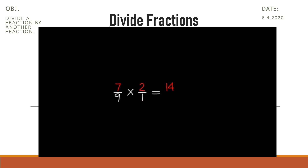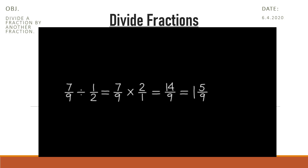Multiply the numerators, then multiply the denominators. When the numerator is greater than the denominator, write the answer as a mixed number. Divide the numerator, 14, by the denominator, 9. So, 7 ninths divided by 1 half equals 1 and 5 ninths.